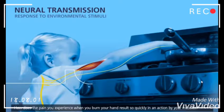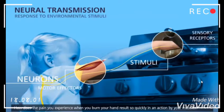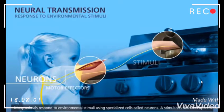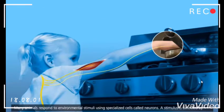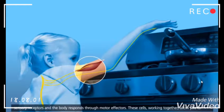How does the pain you experience when you burn your hand result so quickly in an action by your muscles? Many animals respond to environmental stimuli using specialized cells called neurons. A stimulus is detected by sensory receptors and delivered as a response through motor effectors. The cells working together allow you to respond very quickly to threats.